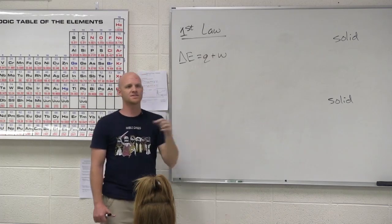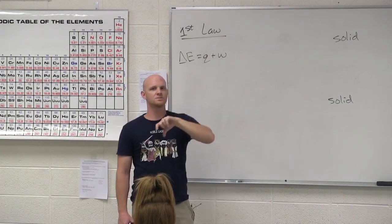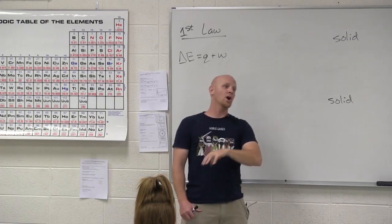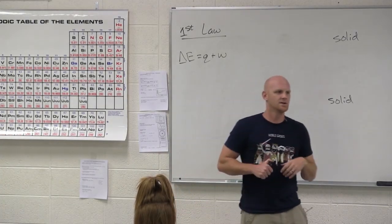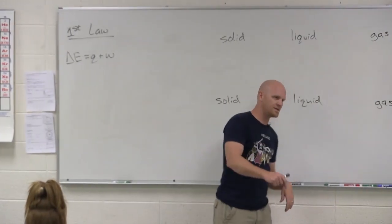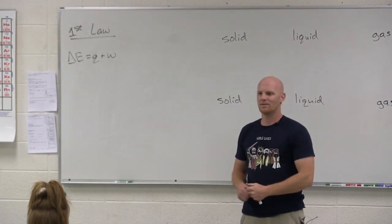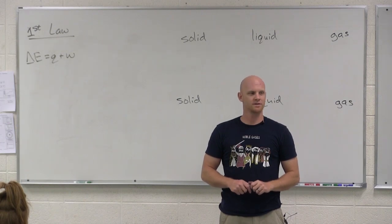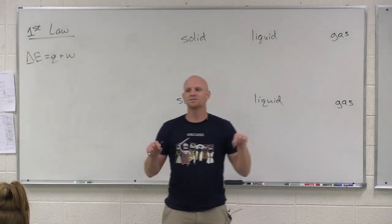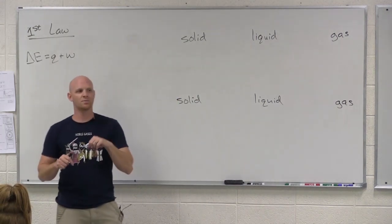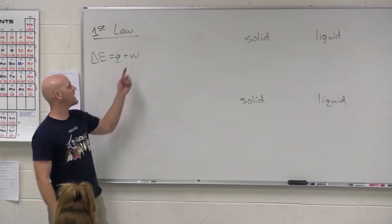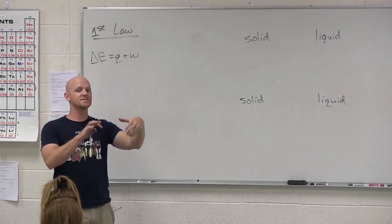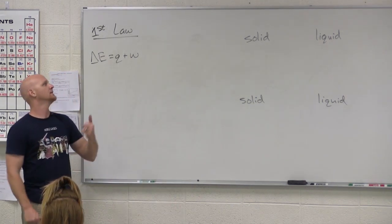So work here. Either the system does work or the surroundings do work. If the system does work, the system is doing work on the surroundings. And if the surroundings do work, the surroundings doing work on the system. So let's pretend that you guys are the system right now. Let's say I give you both a pickaxe and for the next 12 hours you're just pickaxing in the floor. You're doing a bunch of work. Are you gonna end up with more or less energy in 12 hours? You end up with less. When the system does work just like when you do work it ends up with less energy. So if the system does work on the surroundings W is negative. The system is losing energy.